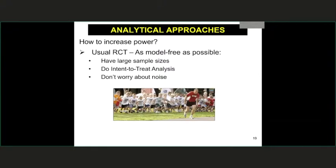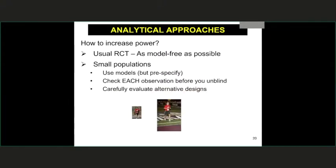Ways to increase power: in the usual RCT, we have large sample sizes, we do ITT analysis, and we don't worry much about noise because randomization takes care of many things. It's like kids running in a race — if one trips and falls, most people won't notice because there's a mass of kids moving around. Whereas in a small sample setting, you're running by yourself — if you trip and fall, everybody watching will notice. That's often similar to the situation in small populations.